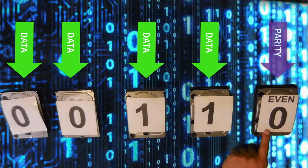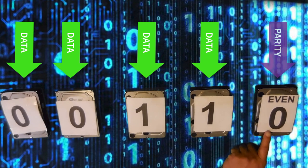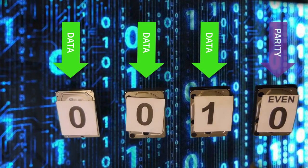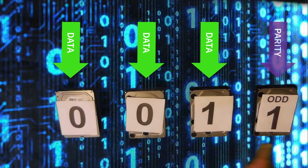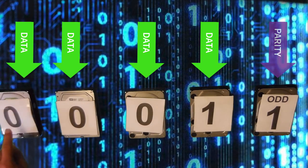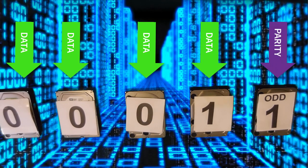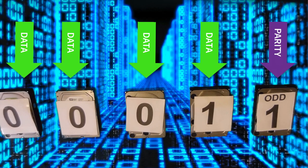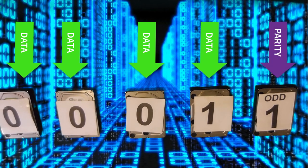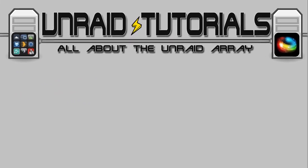If we want to add an extra drive to the array, that's really simple as well. Before a drive is added into the array in Unraid, Unraid will zero the drive. Therefore, the 0 on the drive doesn't affect the parity at all, so the parity doesn't change when an extra drive is added. Starting from an odd parity, adding a zeroed drive makes absolutely no difference — the parity stays the same and it's still odd.